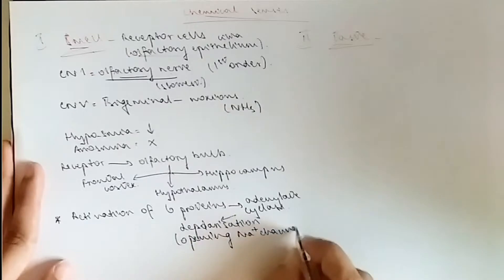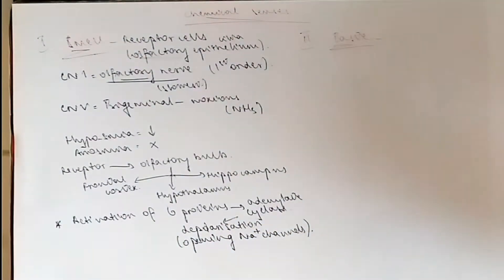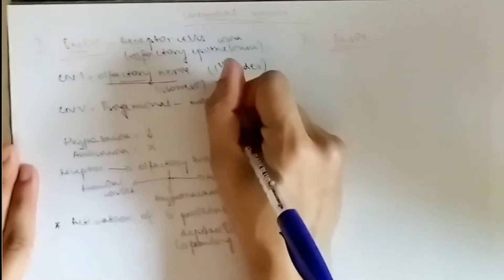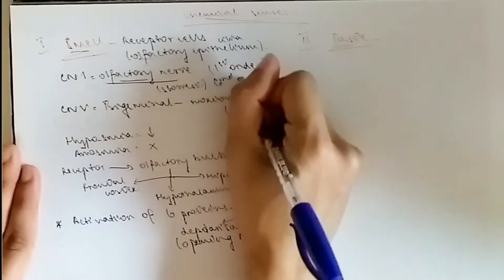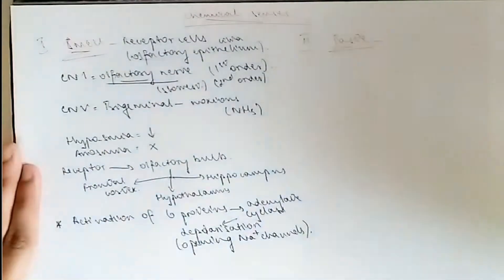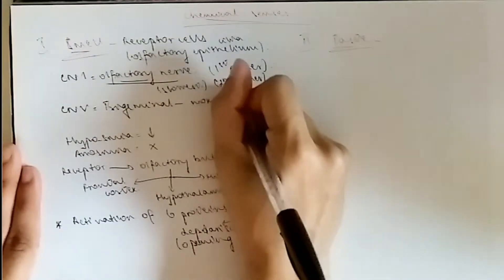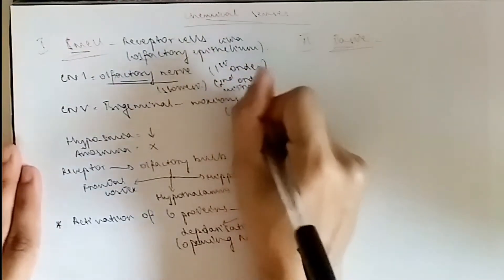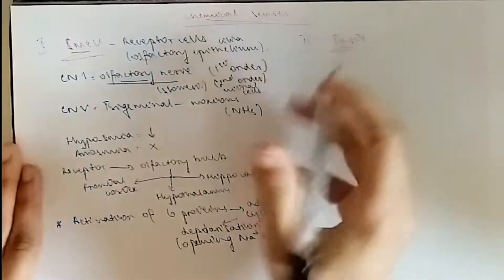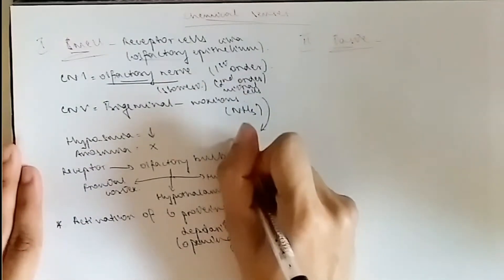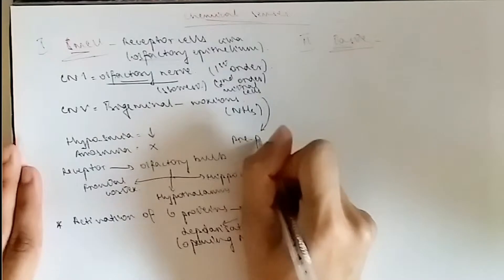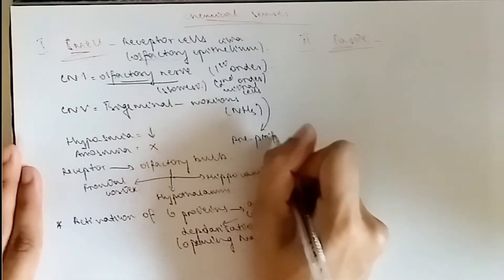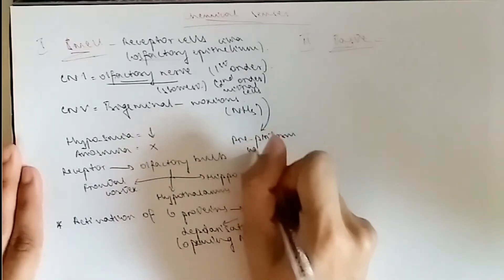So the pathway goes: the first order neuron was the olfactory nerve, then we have the second order neuron, which is the mitral cells, and they go to the pre-piriform cortex, obviously, which is the cerebrum.